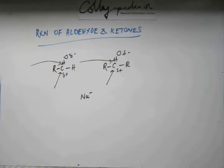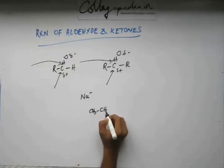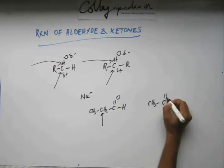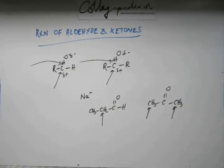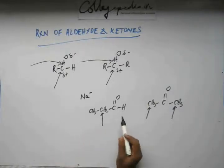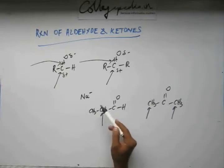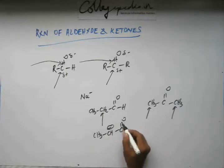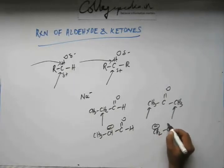There is one more reactive site in both aldehyde and ketone. For example, take propanol — this carbon adjacent to the carbonyl, and for any other ketone, that alpha carbon as well, is also a reactive site. Why? Because the hydrogen on this alpha carbon is acidic. When a base abstracts a hydrogen from this carbon, carbon gains a negative charge, since hydrogen leaves as H+, depositing its electrons into the orbital of carbon.